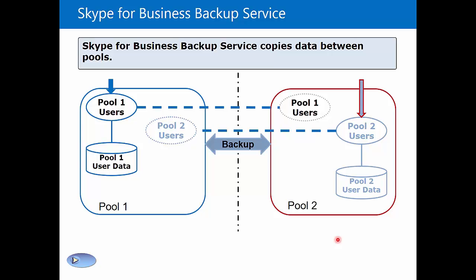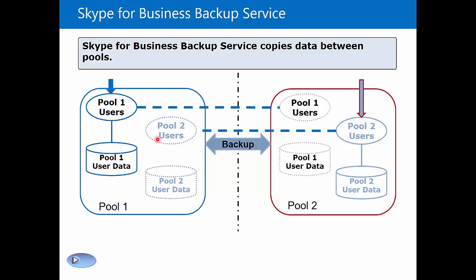This ensures that my Pool 1 users have a shadow identity, if you will, on Pool 2, and likewise for my Pool 2 users, they have an existence on Pool 1. These are not active copies, but these are instances of the user's data, so that in the event of a failure, we will be able to bring the users over to the secondary pool.